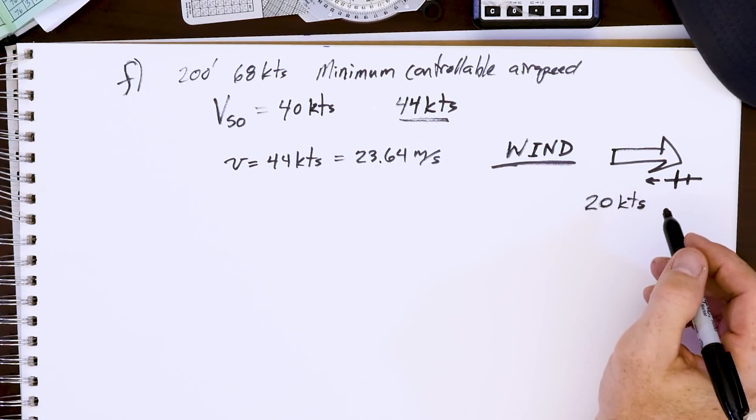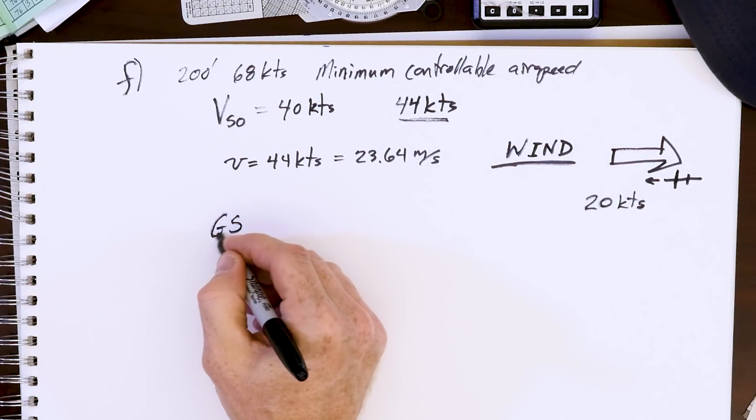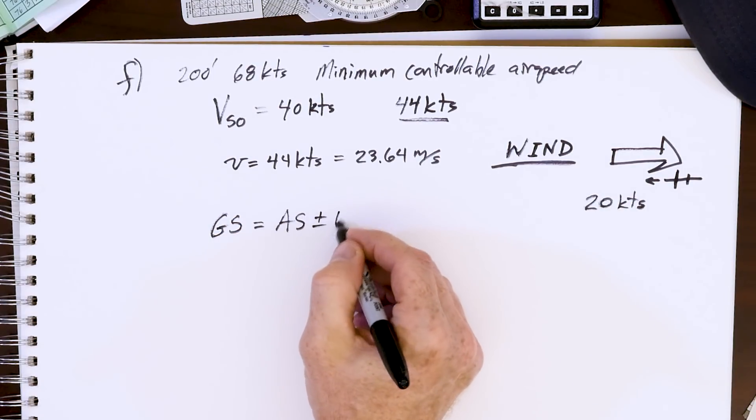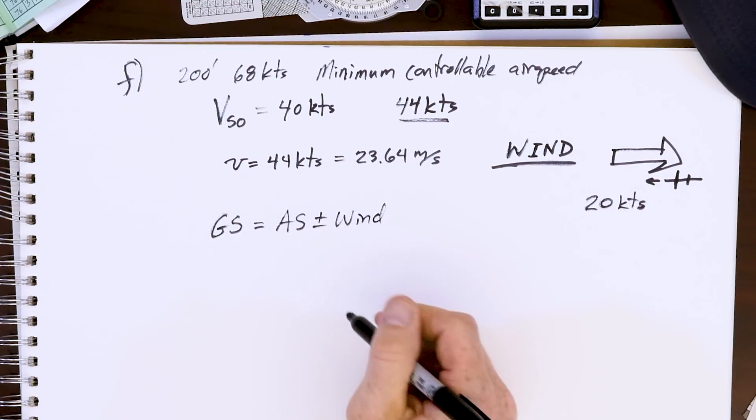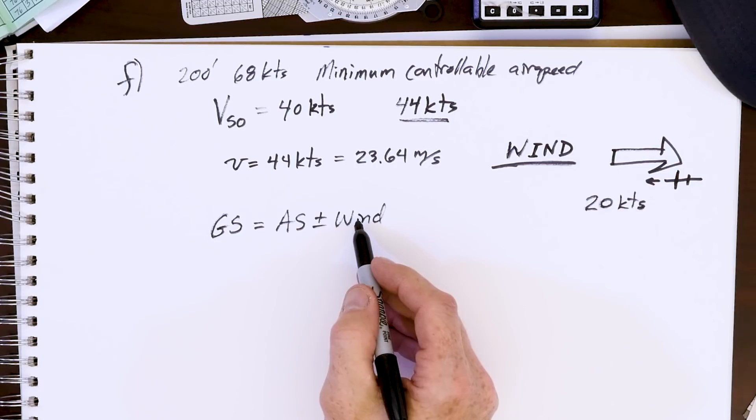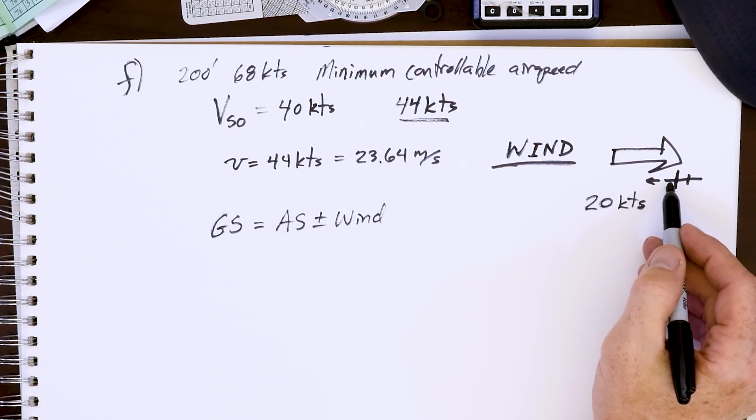We do have to think of ground speed. What does that mean? It means your airspeed plus or minus your wind speed. If you land with a tailwind, you're going to add them to get your ground speed. If you land with a headwind, you subtract them.